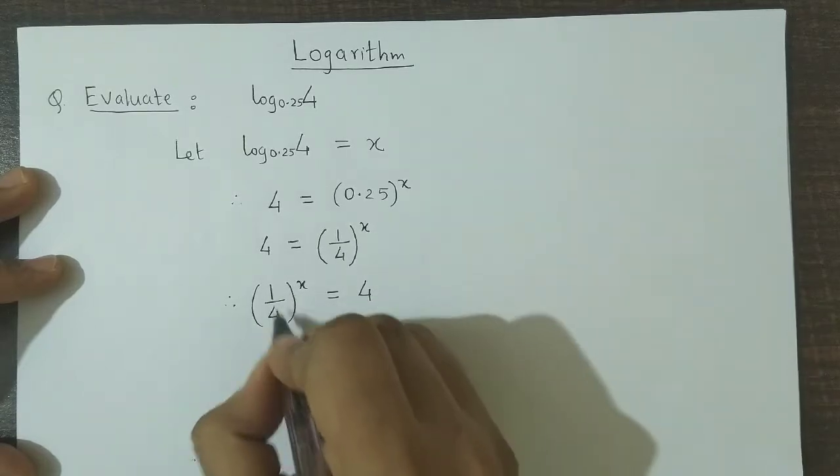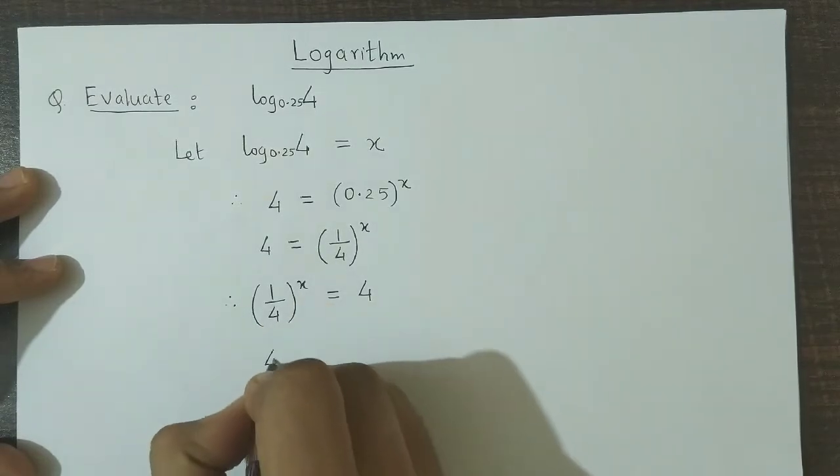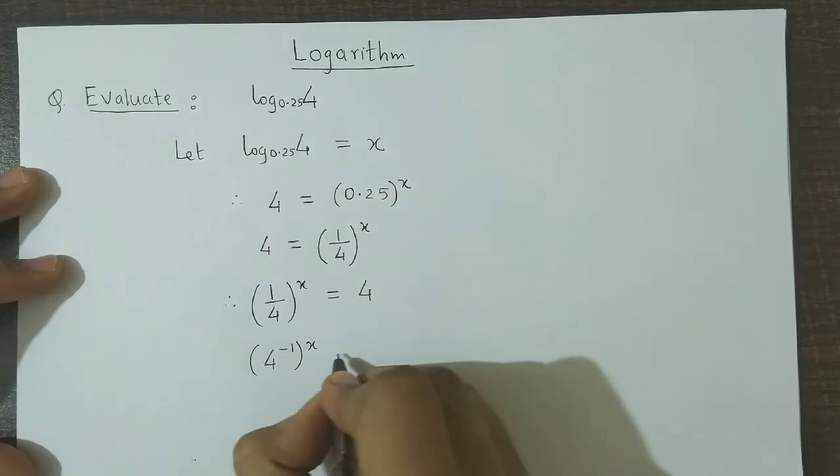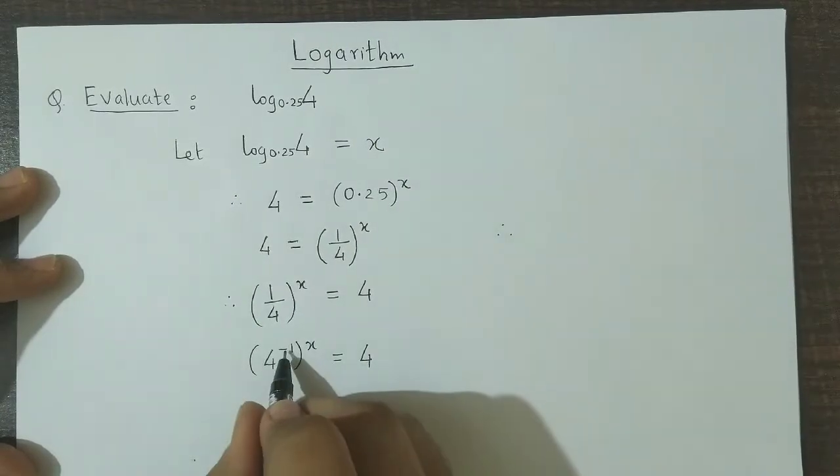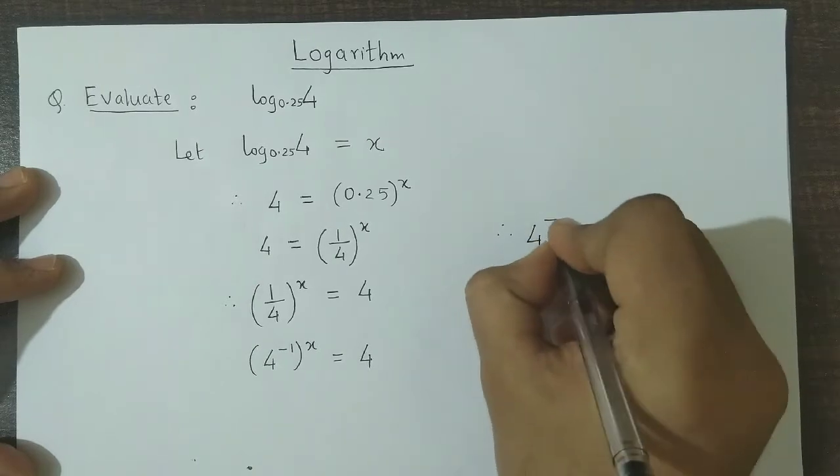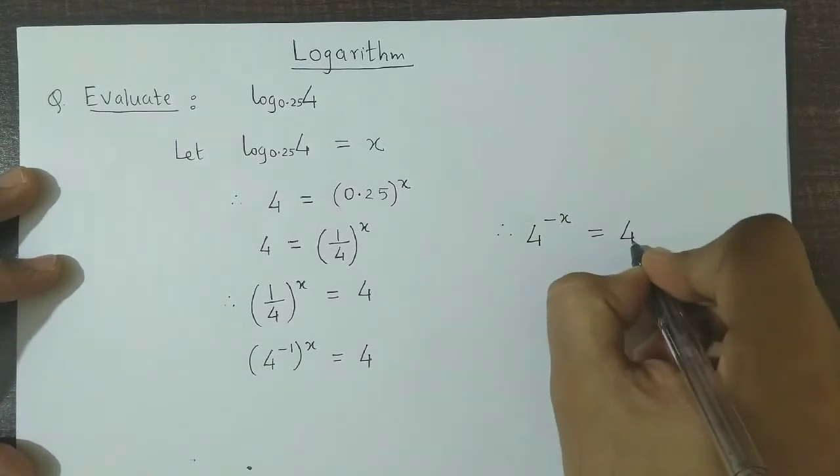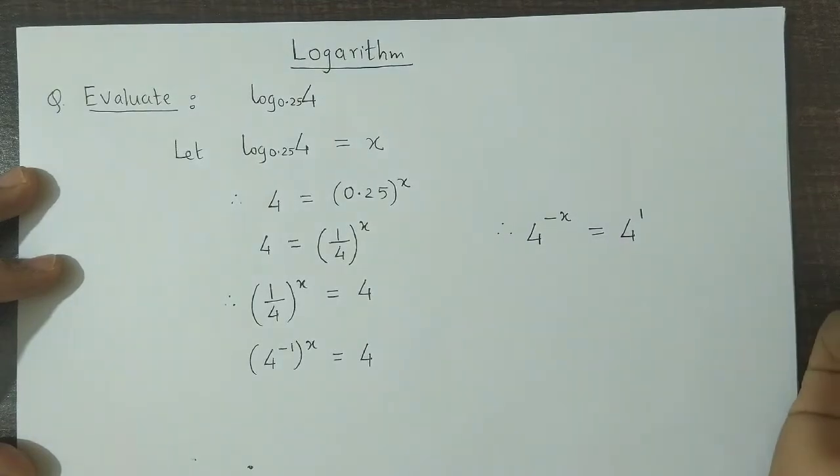Now if we take the reciprocal of this 1 by 4, we obtain 4 raised to minus 1 raised to x is equal to 4. So therefore minus 1 into x is minus x. So therefore 4 raised to minus x is equal to, now the right hand side could be written as 4 raised to 1.